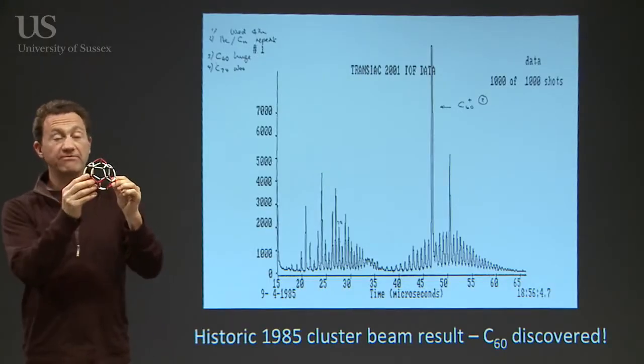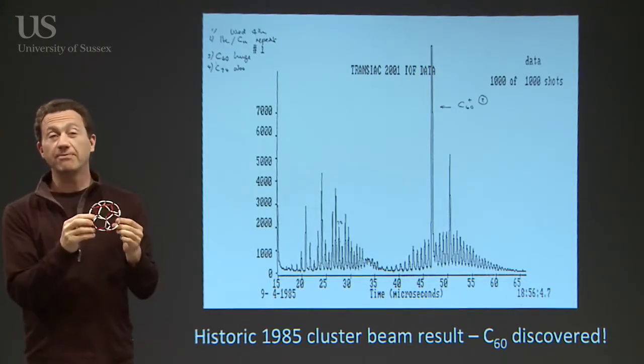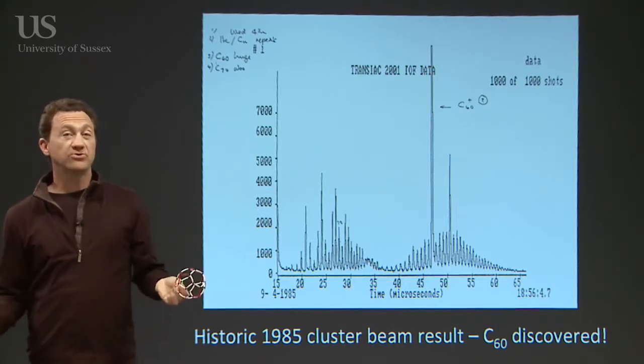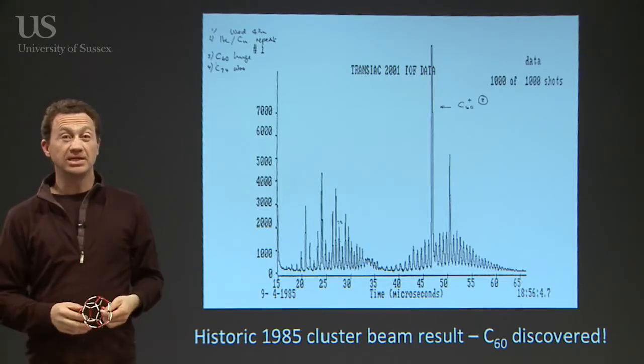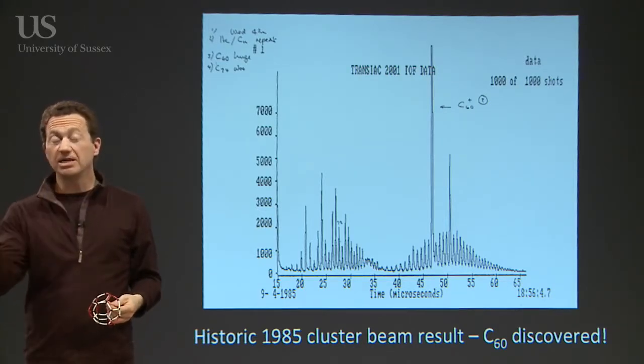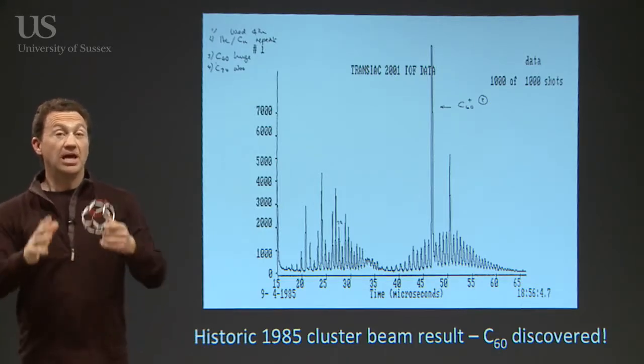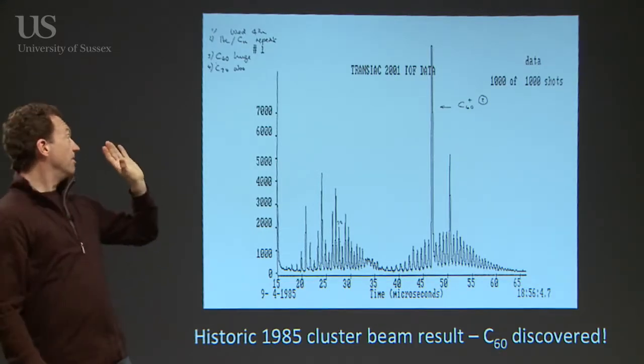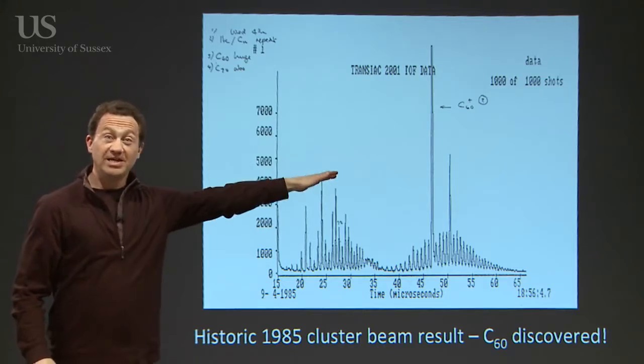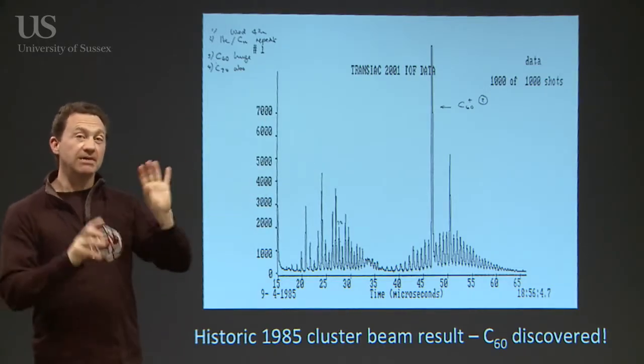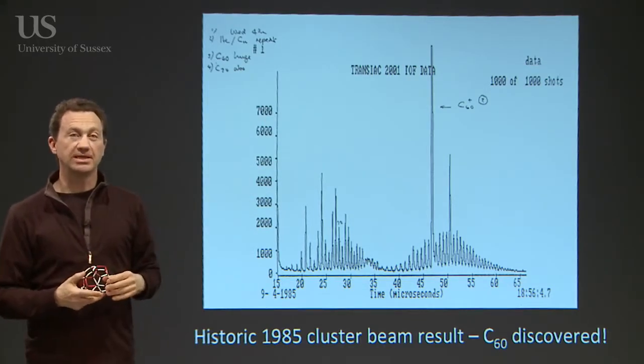When C60 was discovered, it was discovered on what's called a cluster beam apparatus, which is a mass spectrometer, a very sensitive instrument that can pick up tiny amounts of material. The results of that experiment were basically a graph. It didn't represent a way of actually making the molecules. That came later with what's called the carbon arc technique.